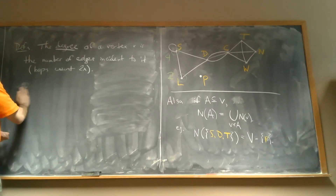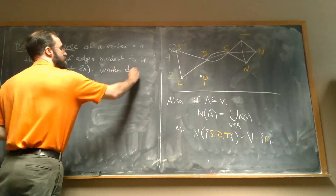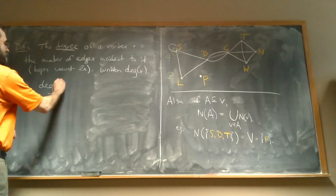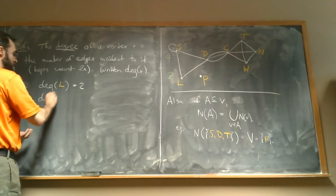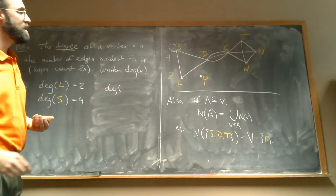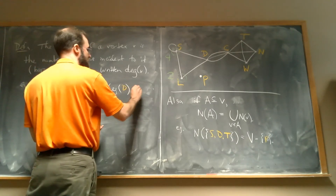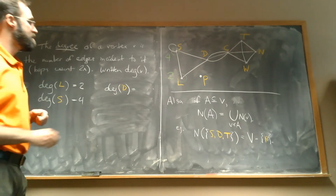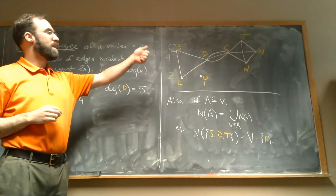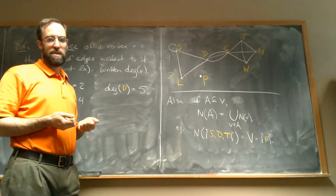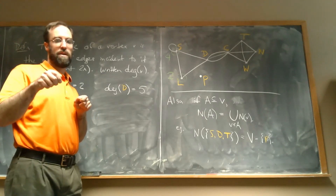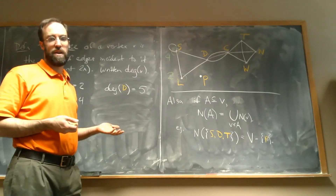The degree is written as deg(V). For example, the degree of L is 2, the degree of S is 4, and the degree of D is 5. It's important that we're counting the number of edges incident to a vertex. When we have loops and multiple edges, this may not equal the number of vertices it's adjacent to. But if there are no loops and no multiple edges, then the degree of V equals the size of its neighborhood.